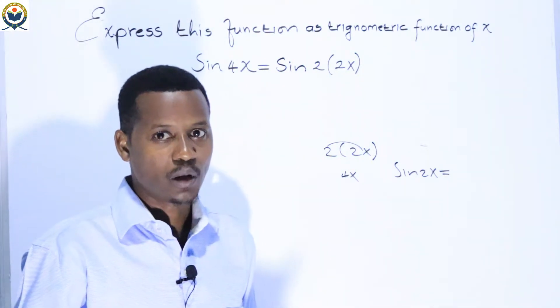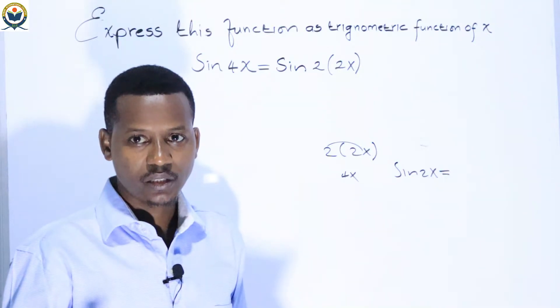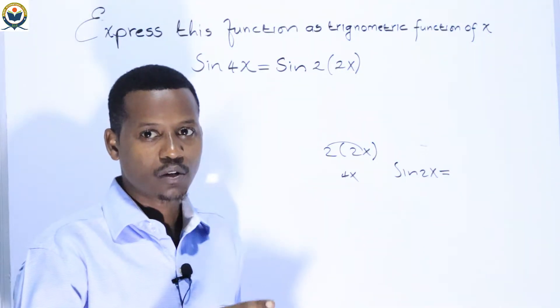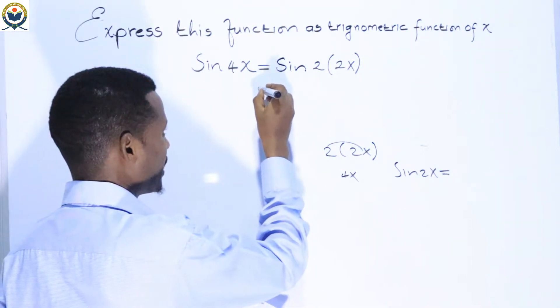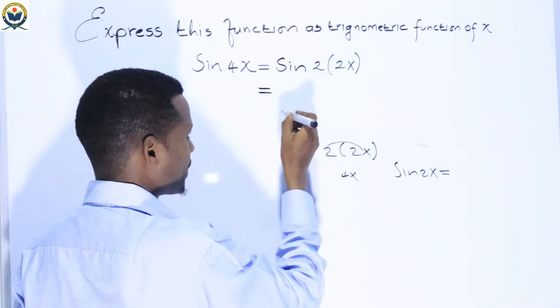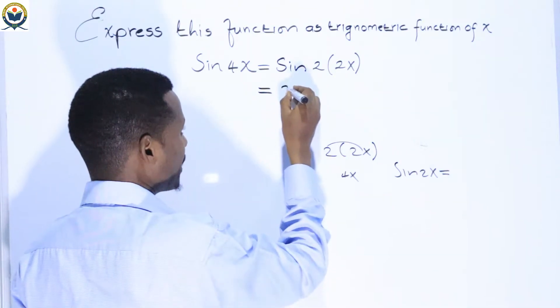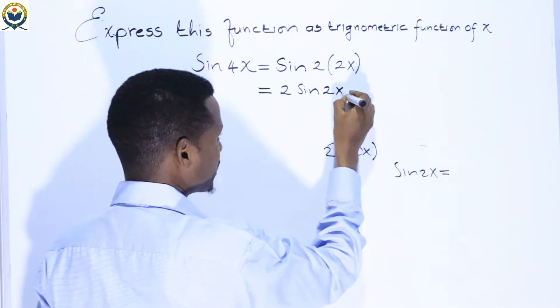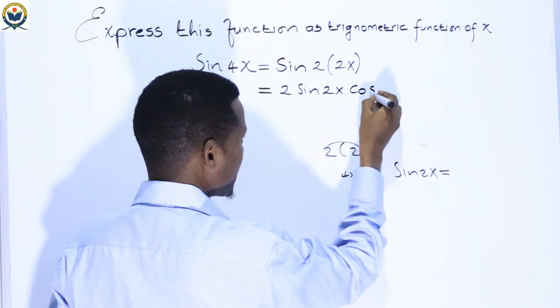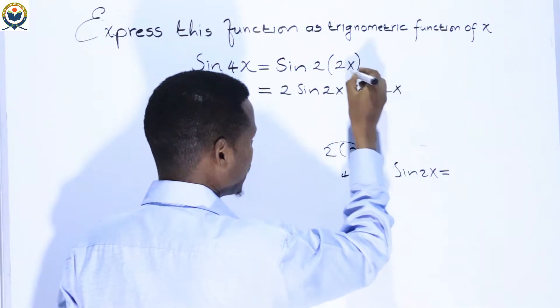Sin of double angle formula: sin(2x) equals 2 sin(x) cos(x). For our case, the angle is 2x, so sin(2·2x) becomes 2 sin(2x) cos(2x).